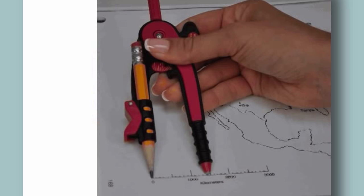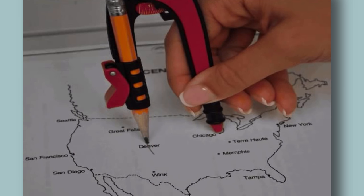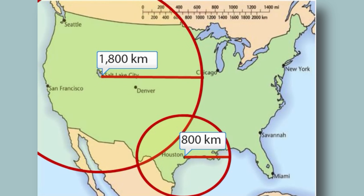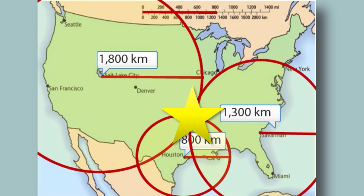If we did it right, the three circles we draw should pretty closely intersect at a point. So, boom! There it is! Now, do you see why we call it triangulation?